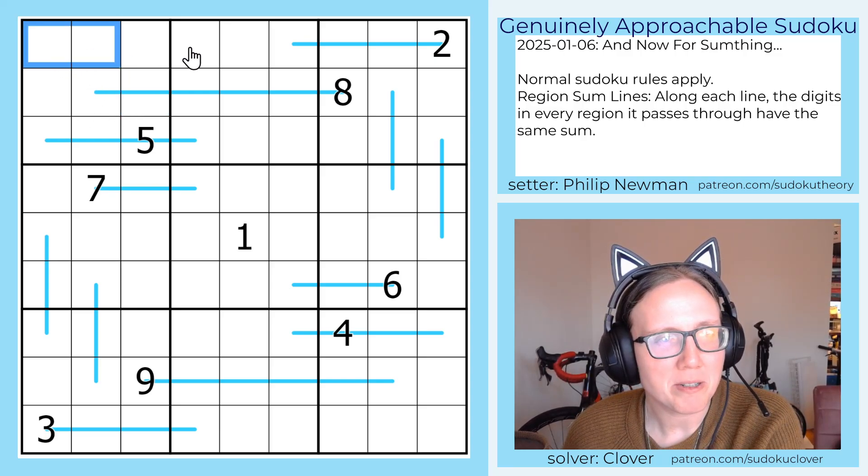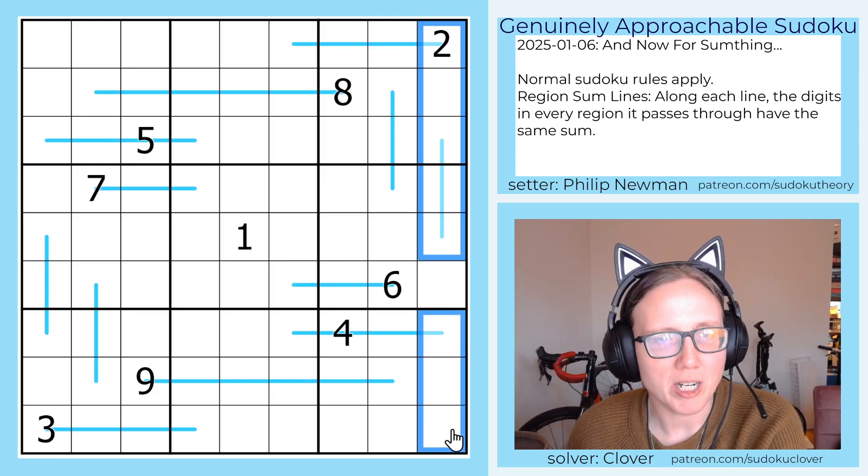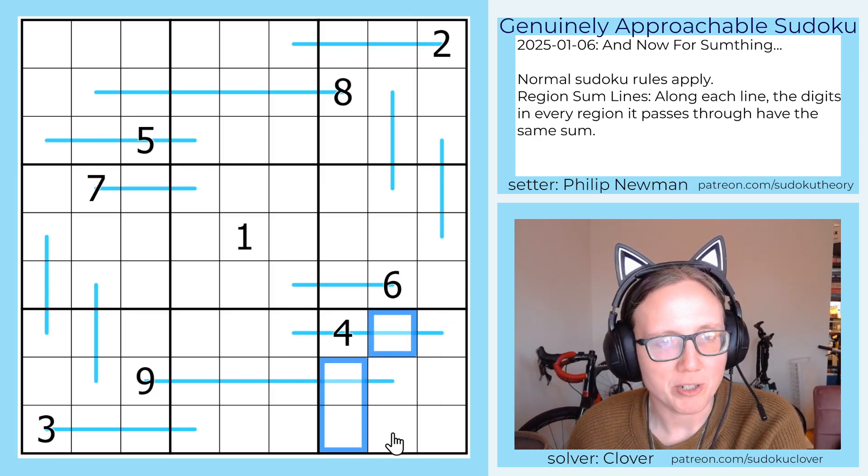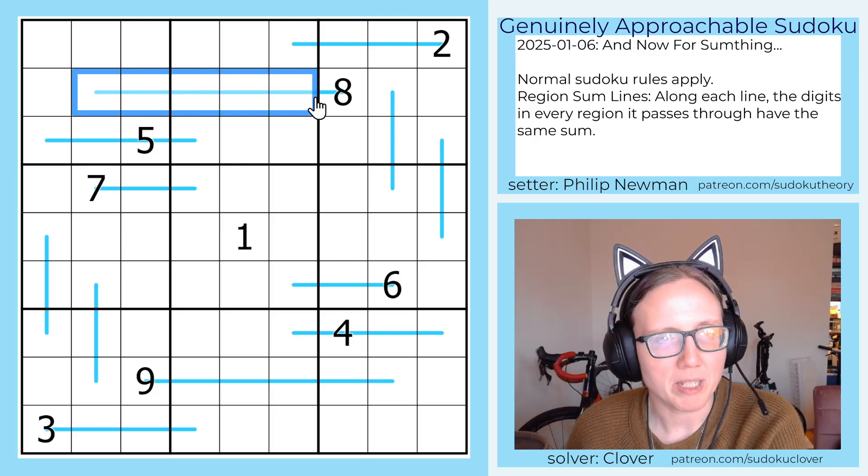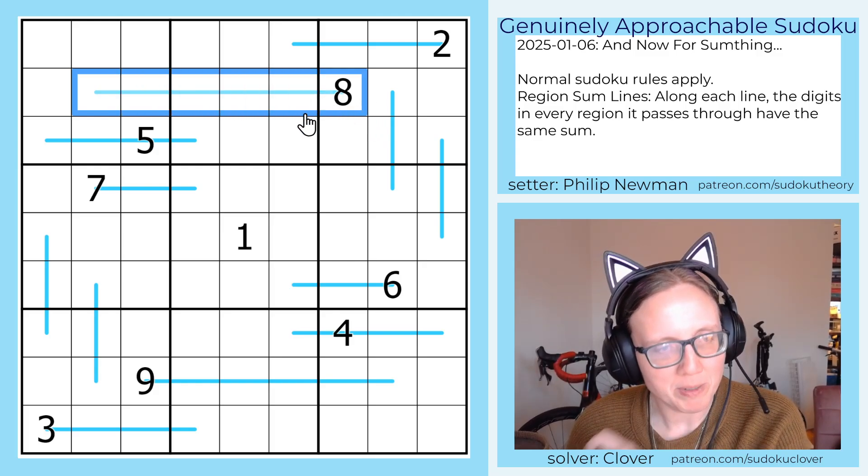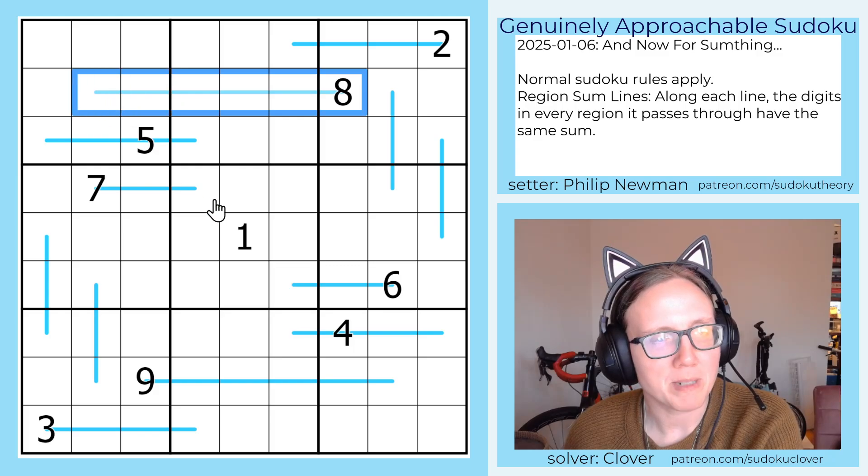We have standard Sudoku rules, so we're placing the digits 1 through 9 once each in each row, each column, and each outlined 3x3 region. In addition to that, we have some region sum lines in the grid.